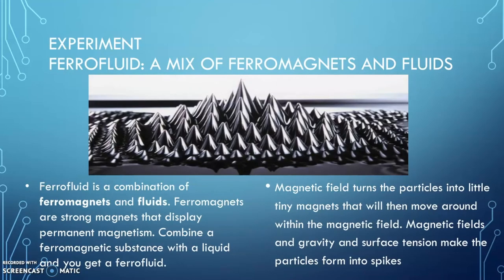And these ferromagnets have a strong permanent magnetism in them that display permanent magnetism, like I talked about. So, if you put that with the liquid, you can make a ferrofluid. So, it's literally mixing this idea of a ferromagnet and liquid and you're making a fluid that's magnetic.